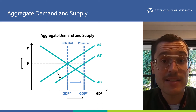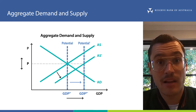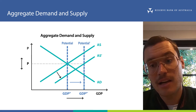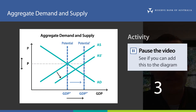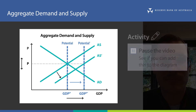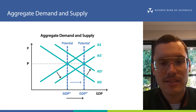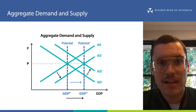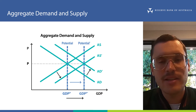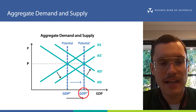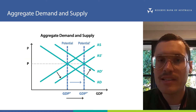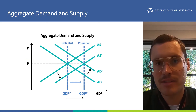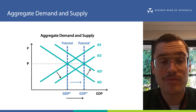The economy can now sustain an increase in aggregate demand like we saw earlier without seeing upward pressure on prices. Aggregate demand would also shift to the right. We're now at a permanently higher level of GDP and prices remain stable, so long as the increase in aggregate demand and aggregate supply is roughly the same.